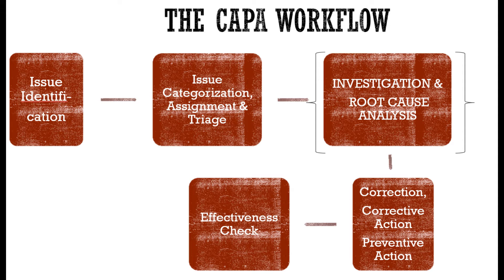There would be one issue owner who, as the name suggests, owns the issue and is responsible for coordinating the investigation and keeping track of all the actions. Apart from that there would also be an approver or approvers — specifically from the functional team as well as quality assurance — and then, perhaps not at this point but later on, there will also be individual action owners.